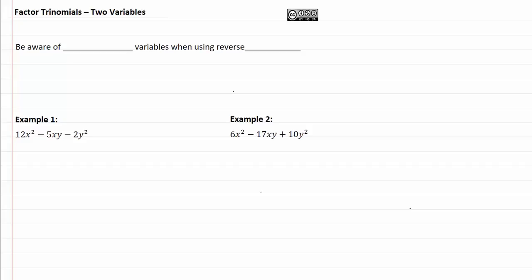Factor trinomials, two variables. Be aware of other variables when we're using reverse FOIL, or in other words trial and error.